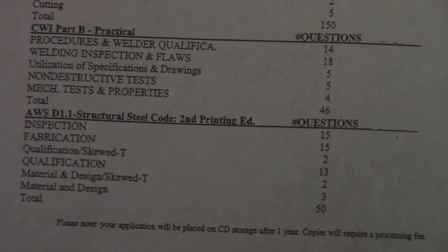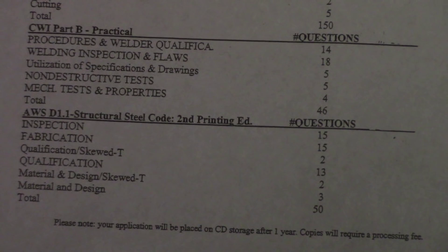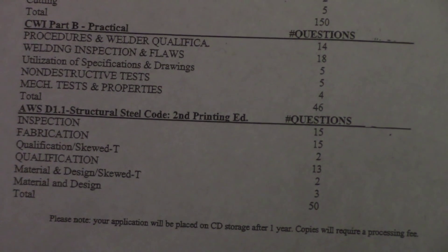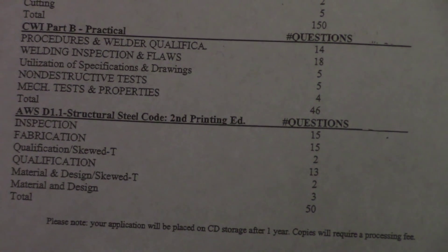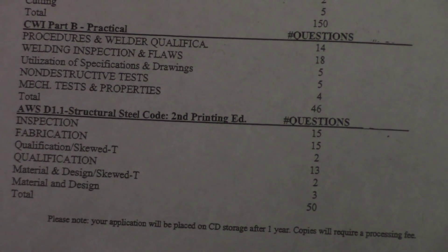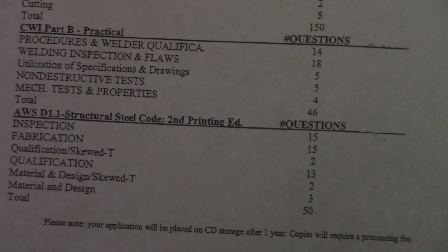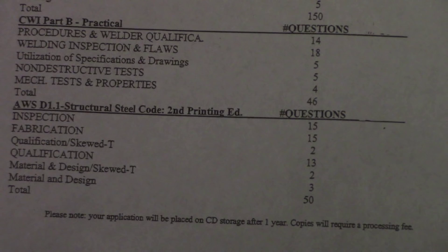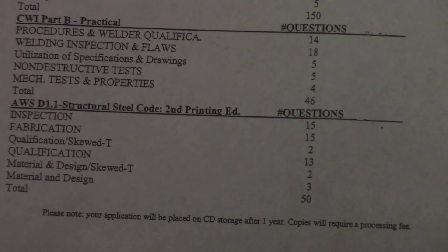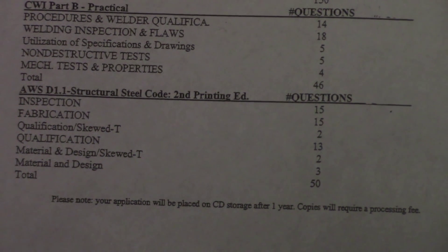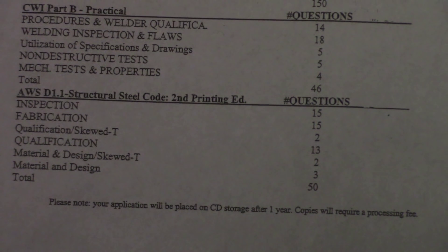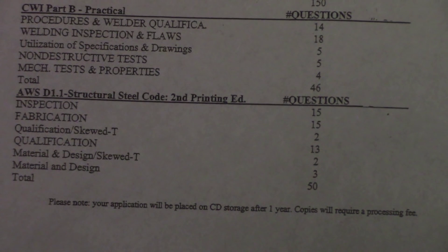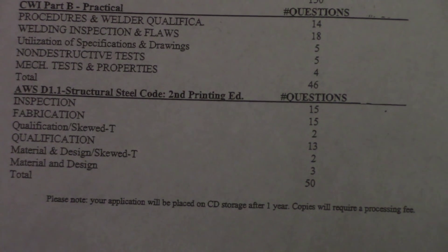The code part: inspection 15, fabrication 15, qualification of skewed T-joints 2, qualification 13, material and design skewed T-joints 2, material and design 3 — grand total of 50. Hopefully all that made sense. If you have any questions, go ahead and throw them in the comments. Thanks for watching and subscribing to TV Weld. Good luck on your test.